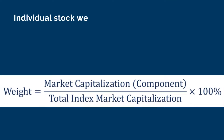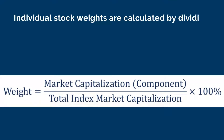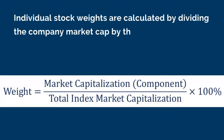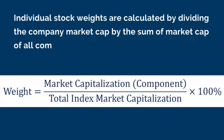Individual stock weights are calculated by dividing the company's market cap by the sum of market cap of all companies in the Nifty 50 index. Please refer to the formula on the screen for a better understanding.